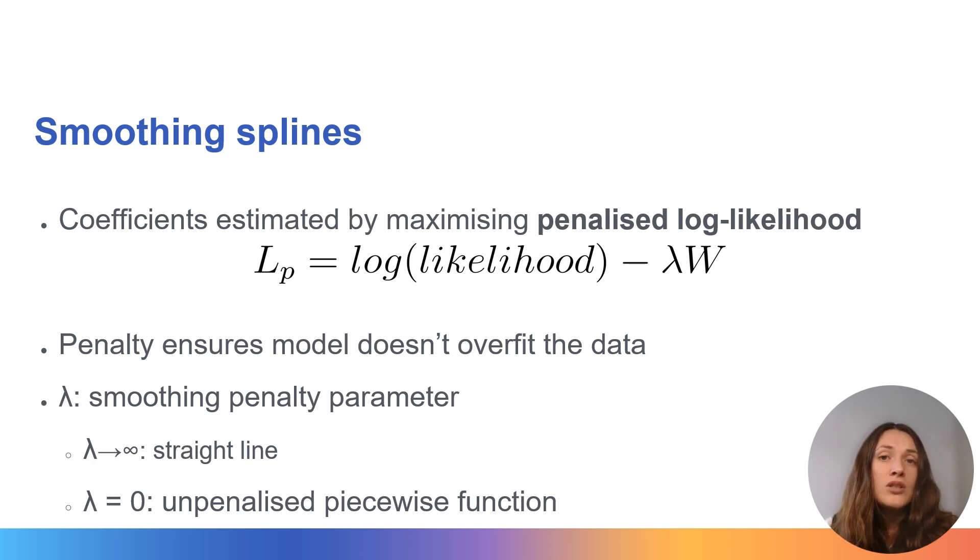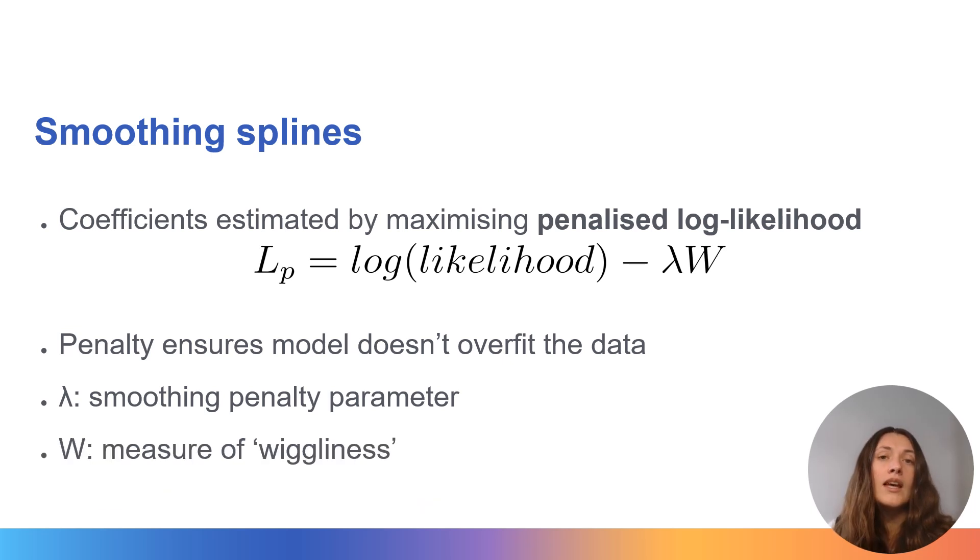So this lambda is estimated as part of the model fitting process, and the model will aim to find some kind of middle ground between these two extremes. The second component, w, is actually coming from our model. It's a measure of model wiggliness. It's based on the integral of the second derivative of the smooth function squared.